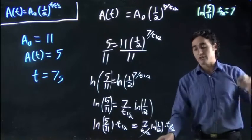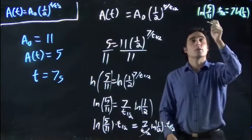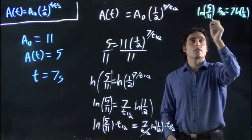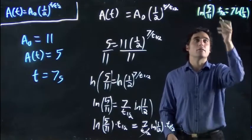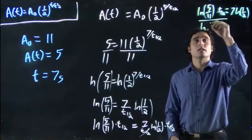I'm going to clean this right-hand side up a little bit. Because the t₁/₂'s cancel. So what do we want to do if we want to get this on its own? Right now we have ln of 5/11 multiplying by t₁/₂. Divide both sides by that. As always, both sides.